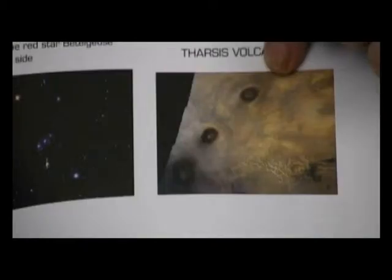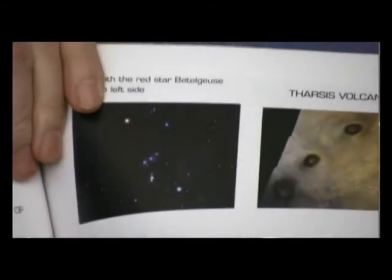There are three volcanoes in the Tharsis region of Mars — that's the surface of Mars. Can you show the audience which picture it is? Yes, we're talking about this area here. I'm putting forth some arguments that these three volcanoes are mathematically and scientifically very similar to these three stars in Orion. We're lucky here in Southern California that winter's coming and we can see the Orion constellation and those three stars.